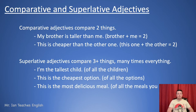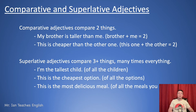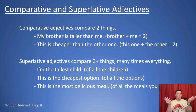Comparative and superlative adjectives — let's start by defining these words. Comparative adjectives are adjectives, so descriptive words, that compare exactly two things. For example: my brother is taller than me — brother and me, that equals two. This is cheaper than the other one — this one and the other one, that equals two.